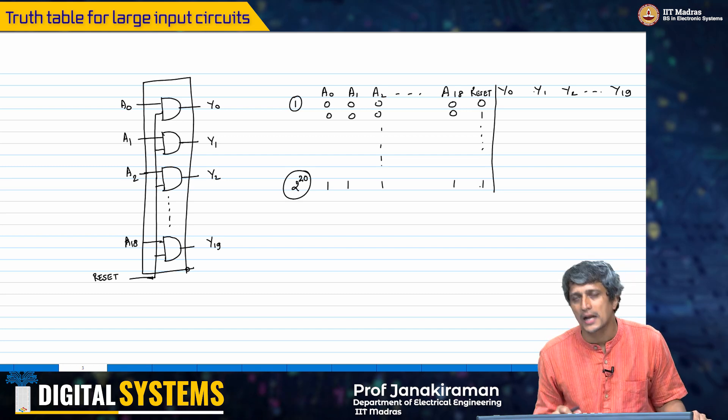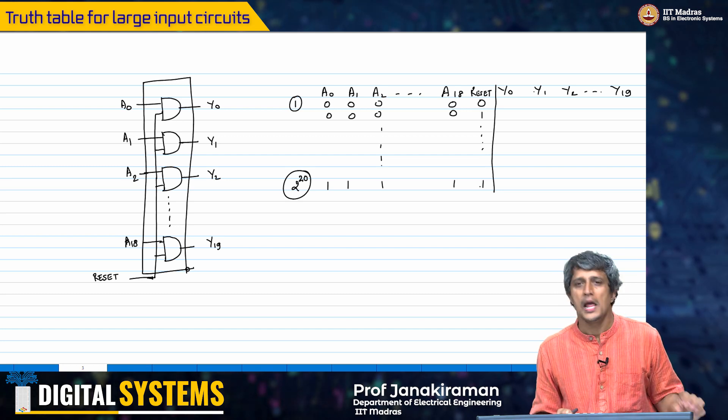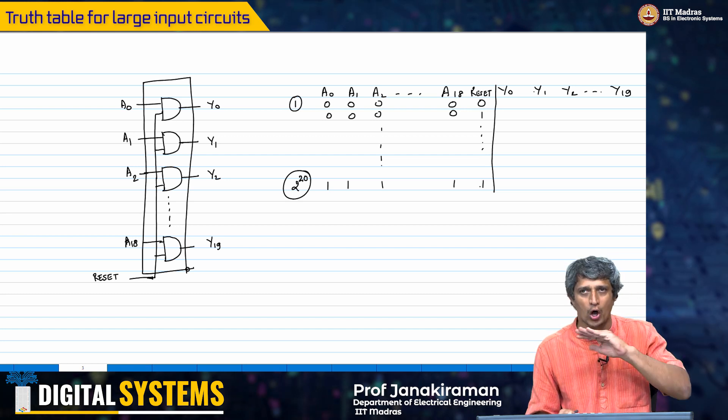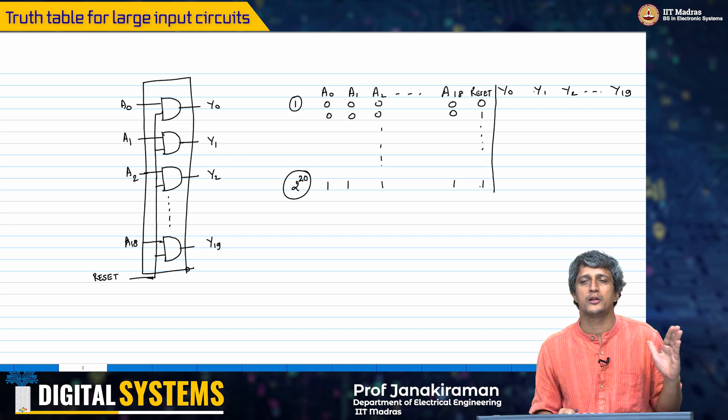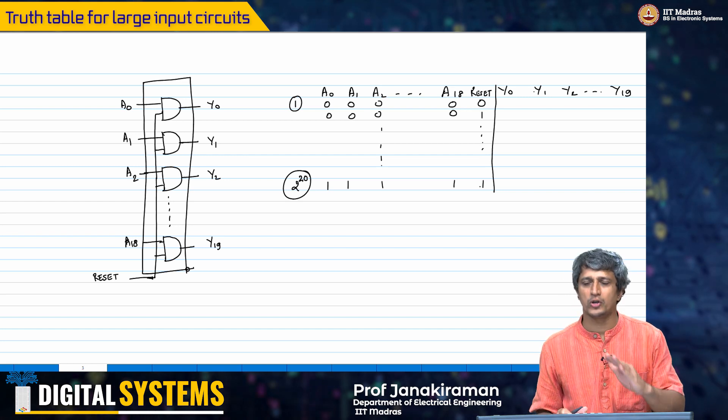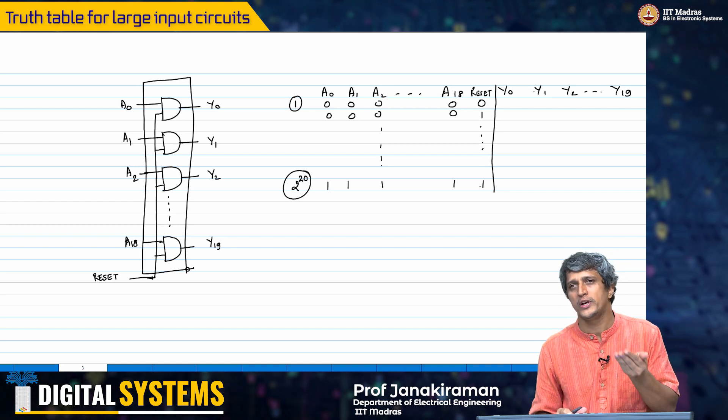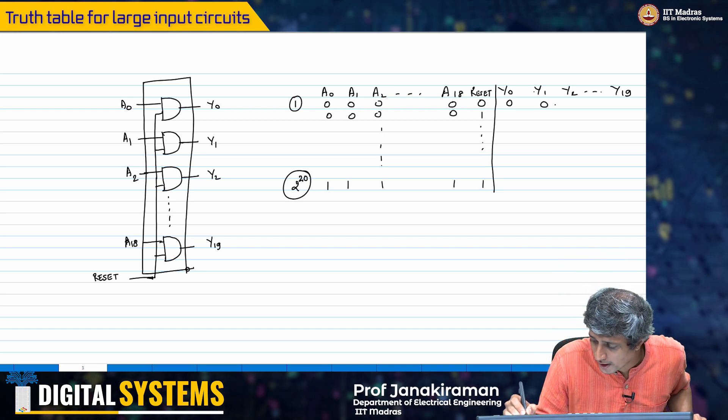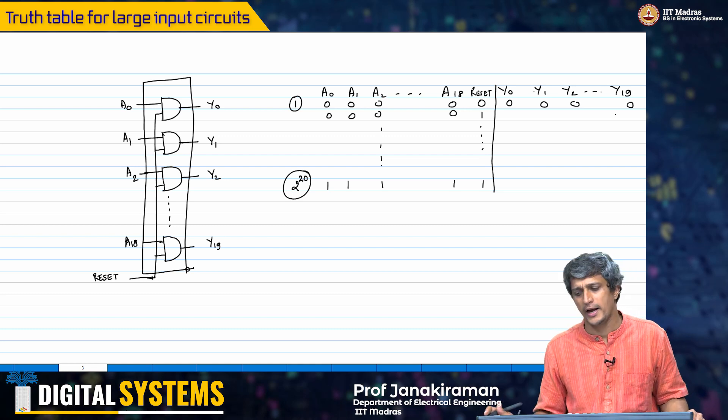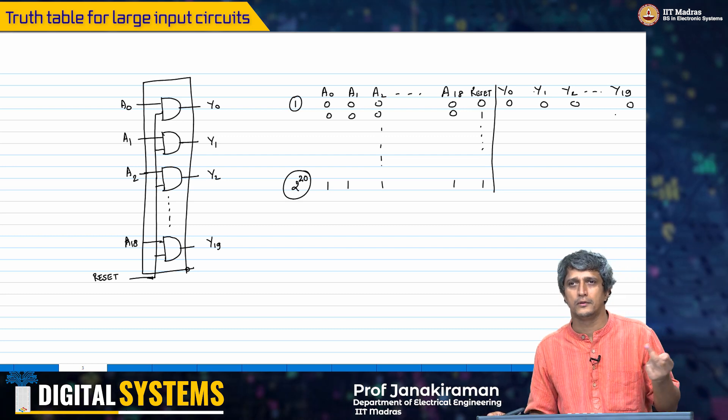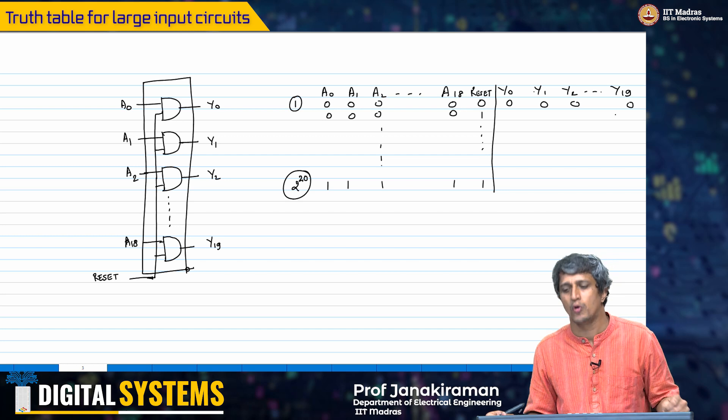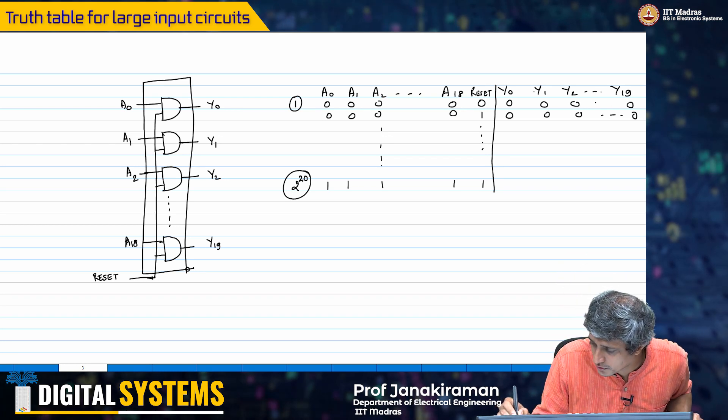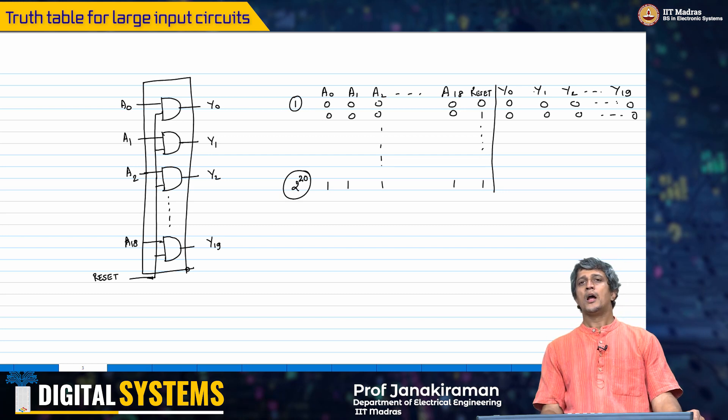I have 0 0 1 all the way to 1 - this is my 2 power 20th combination. If I were to do exactly what I did in the previous example, I would take combination A0 A1 A2 all 0s, propagate it through the AND gate. I know that if any one input to any AND gate happens to be 0, the output will be 0. Therefore, all 0s. Likewise, then I will take all 0s with reset equal to 1, and then I will again find this output is all 0s.